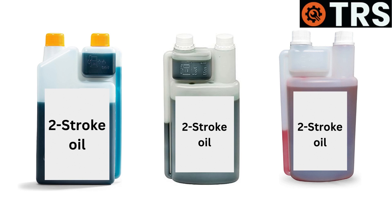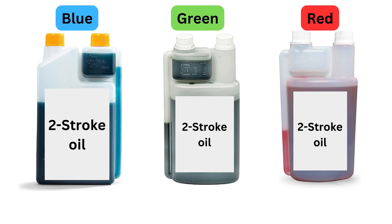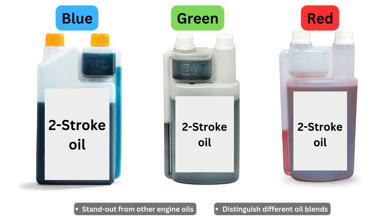Have you ever wondered why two-stroke oils sometimes differ in color? Well, they are frequently colored brightly, such as blue, green, or red, for example, to assist them in standing out from other kinds of engine oils and to help distinguish different oil blends with various performance characteristics.